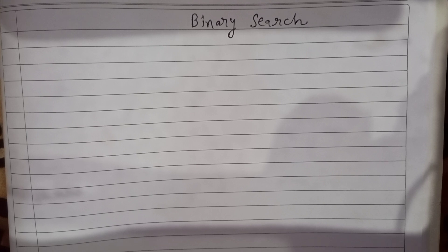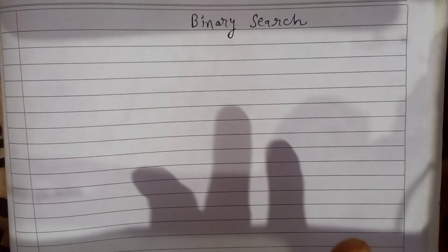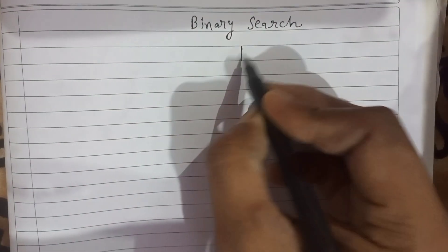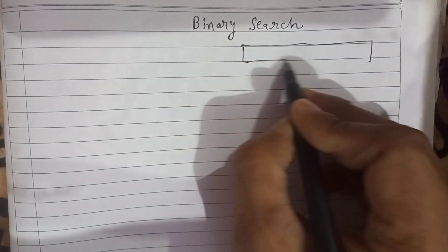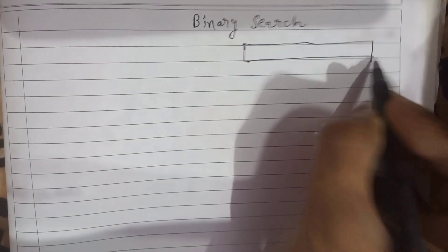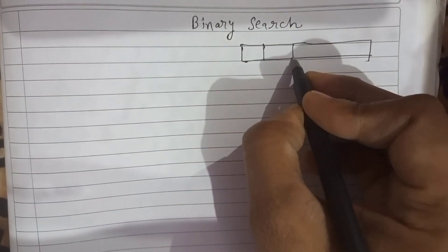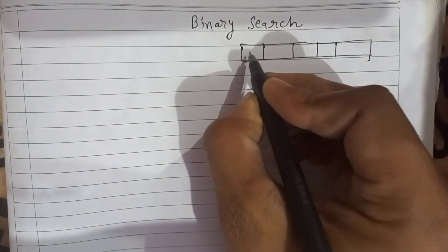Binary searching is an advanced searching technique in which many elements are skipped. But one drawback is that in this technique, our array must be in sorted form — it must be in ascending order — only then can we easily perform binary search.